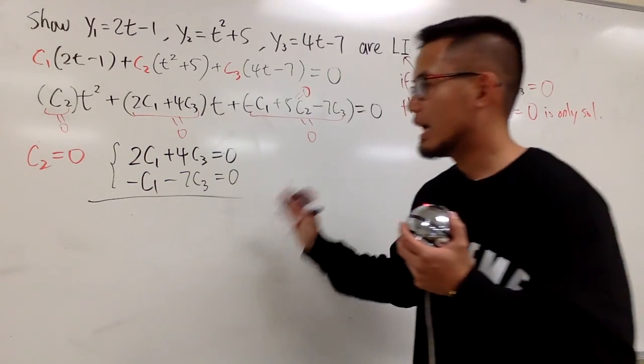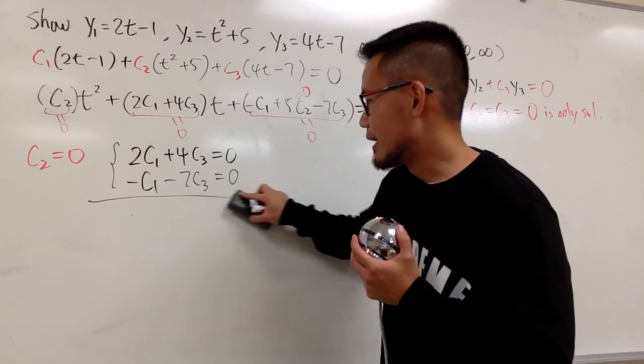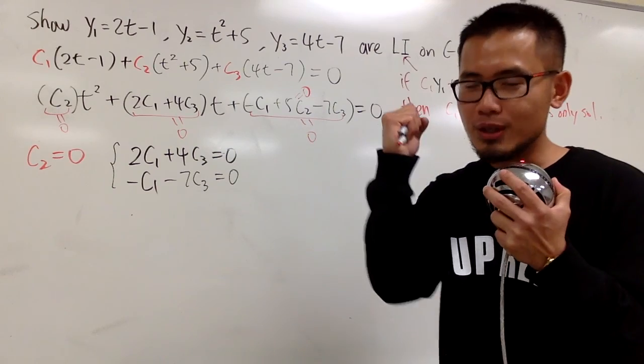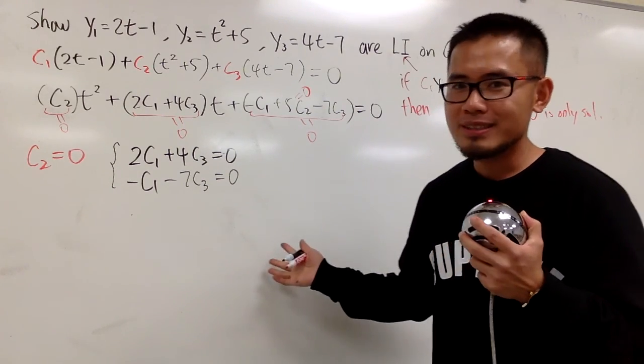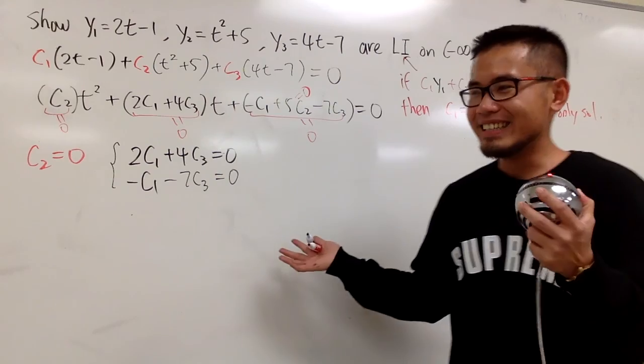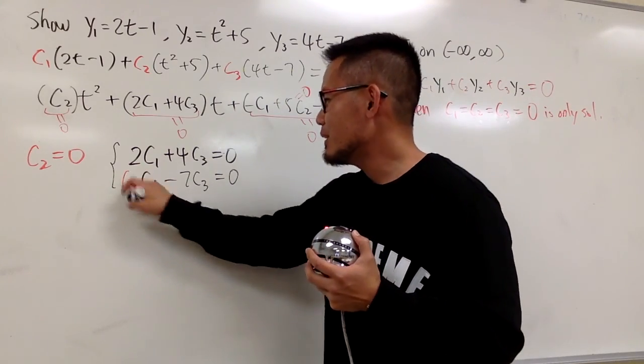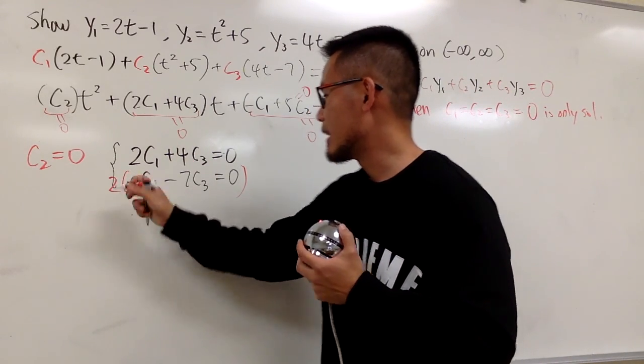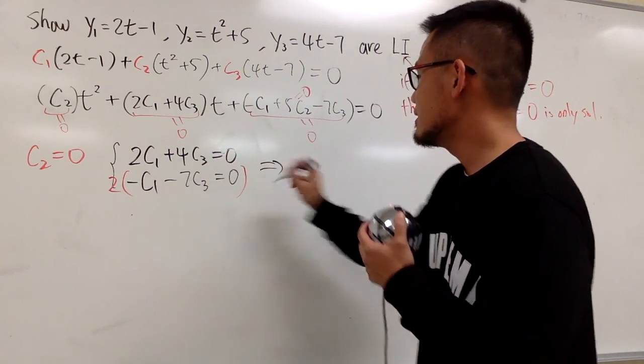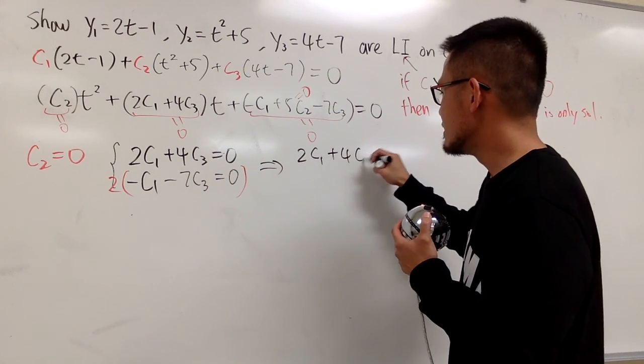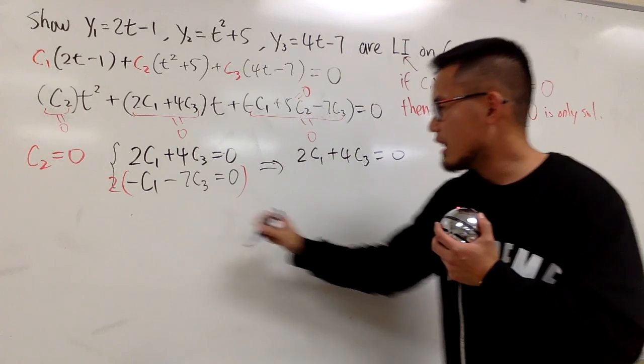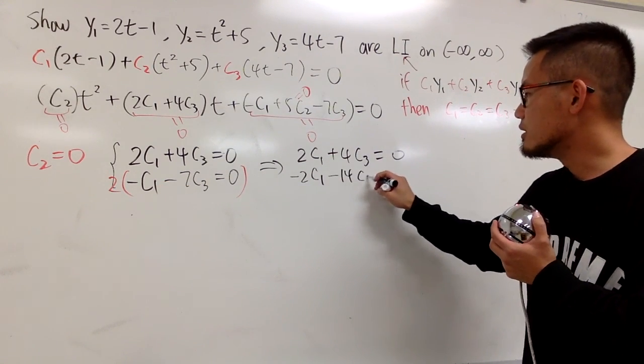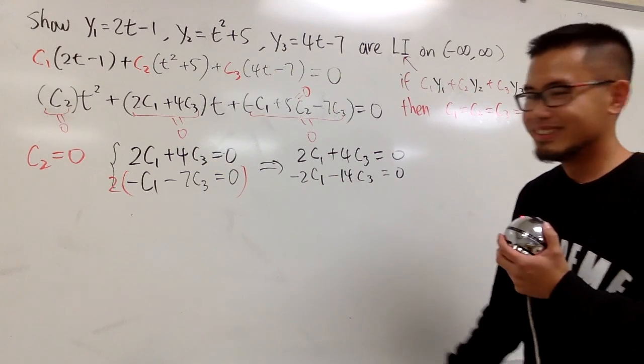Alright? So this is what we have to solve right here. Alright, so for some reason, I couldn't do something like this in the class today. That's why I'm making this video, to redeem myself. Anyways, I don't know why I didn't finish it in the class, but all you have to do is, very easy, I'm just going to eliminate, I'm going to eliminate c1, so I'll multiply everything by 2 right here. So you see, this is 2c1 plus 4c3 equal to 0, and then, second line, you have negative 2c1 minus 14c3 equal to 0.